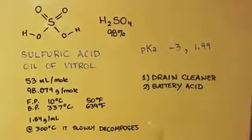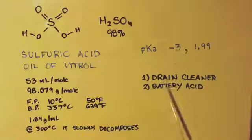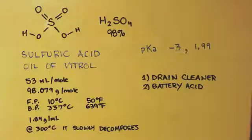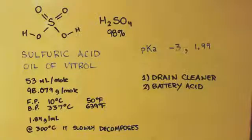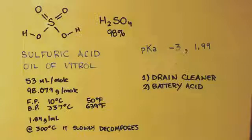You can get sulfuric acid two ways: drain cleaner and battery acid. Battery acid — I'm sure there has impurities — but it looks clear as water, beautiful. I think it's only about 30%, so you'd have to titrate it to find out. Drain cleaner you can get at Lowe's, Walmart, wherever.